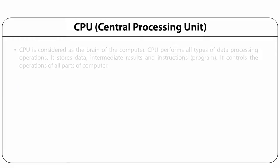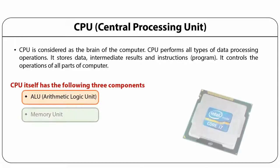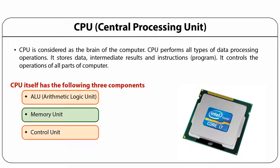The CPU or central processing unit is considered as the brain of the computer. CPU performs all types of data processing operations. It stores data, intermediate results and instructions, and controls the operations of all parts of the computer. CPU has three components: the arithmetic logical unit, memory unit and control unit.